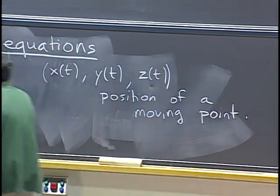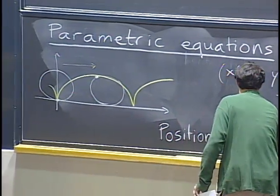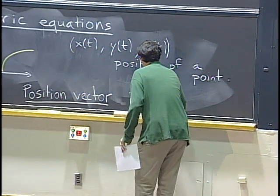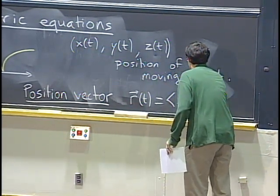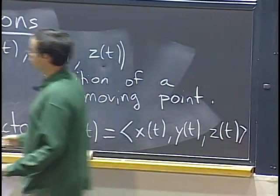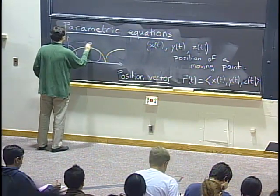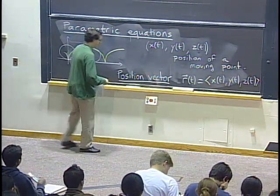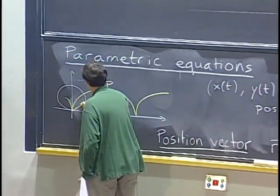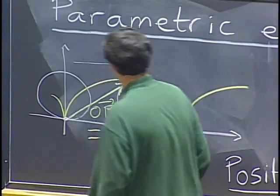One way to think about this is in terms of the position vector. The position vector is just the vector whose components are the coordinates of the point — that's the same thing as the vector from the origin to the moving point. So if our point is here, p, then this vector here is vector OP, and that's also the position vector r of t.